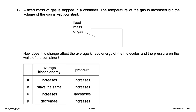A fixed mass of gas is trapped in a container. The temperature is increased but the volume is kept constant. The pressure will increase (so options with pressure decreasing are eliminated). Since temperature increases, molecules collide more frequently and with greater average velocity, so average kinetic energy also increases — option A is the right answer.